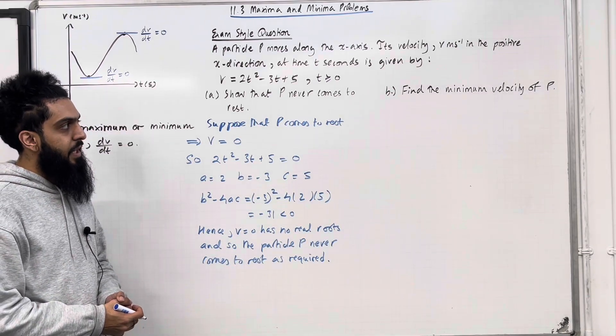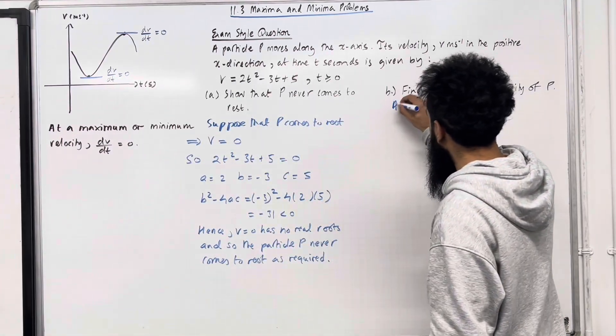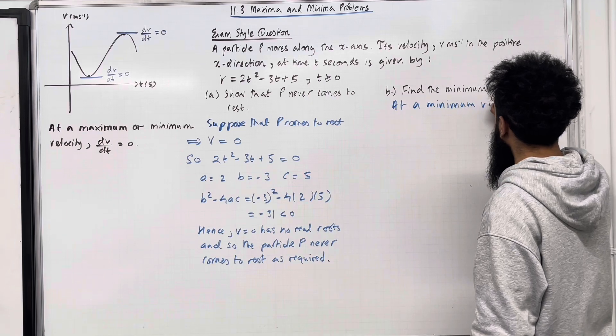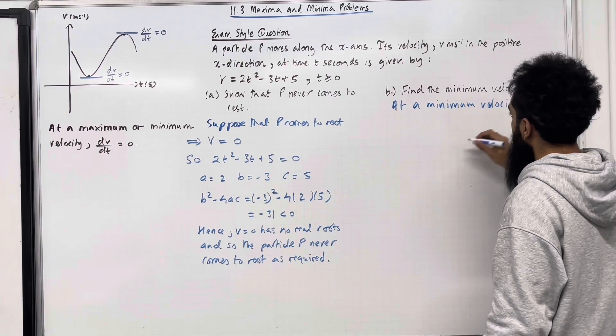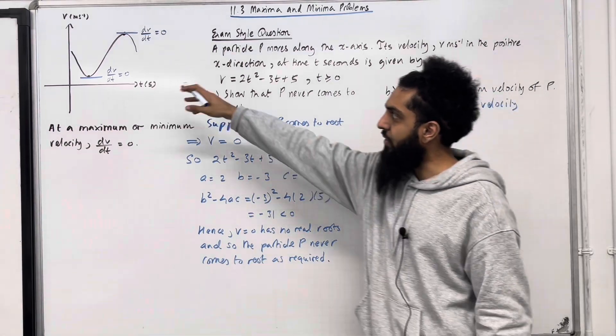Now in part B, we want to find the minimum velocity of p. So we have that at a minimum velocity, dv/dt is equal to 0. That was one of our key facts over here.